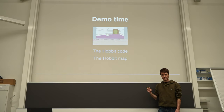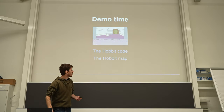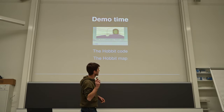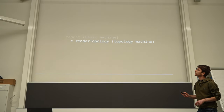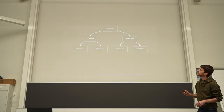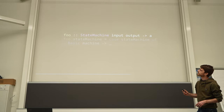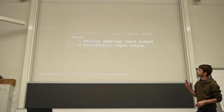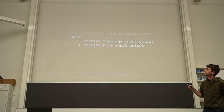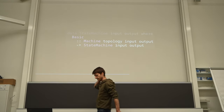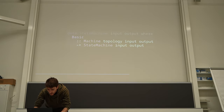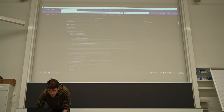Before the demo, are there any questions? Question: Could you show the definition of the basic machine again — how you save the topology inside that? Let's go back and look at the slides. So this is the basic machine definition as it was shown — you can see there are some constraints missing in the slide.